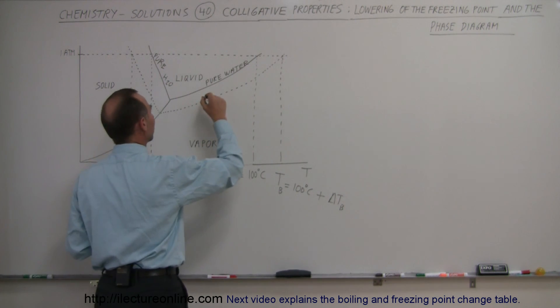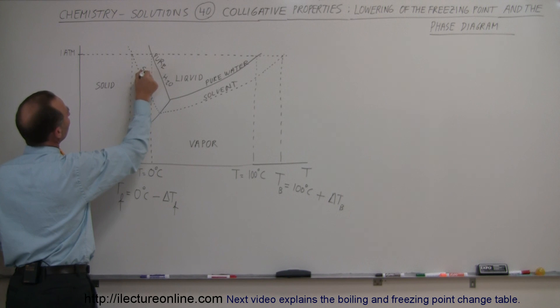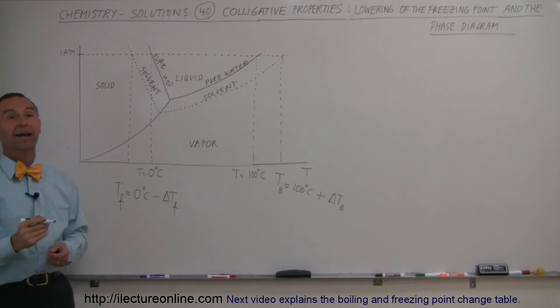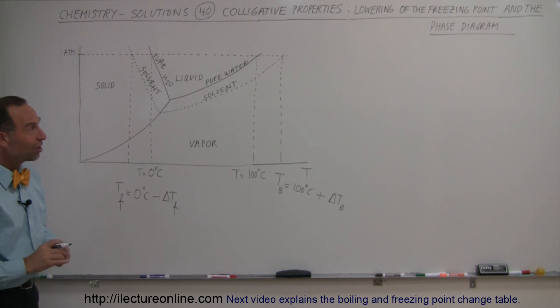So here that would be for the solvent, just put in there to make it clear. And here that would be the curve for the solvent right there. All right, and that's how you have the change on the phase diagram by adding a solute to the pure water.